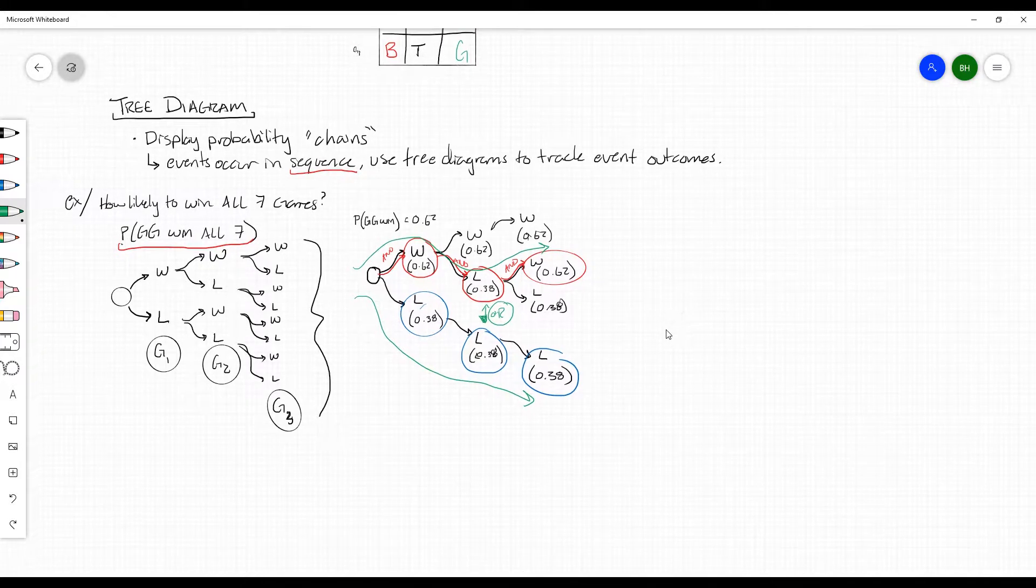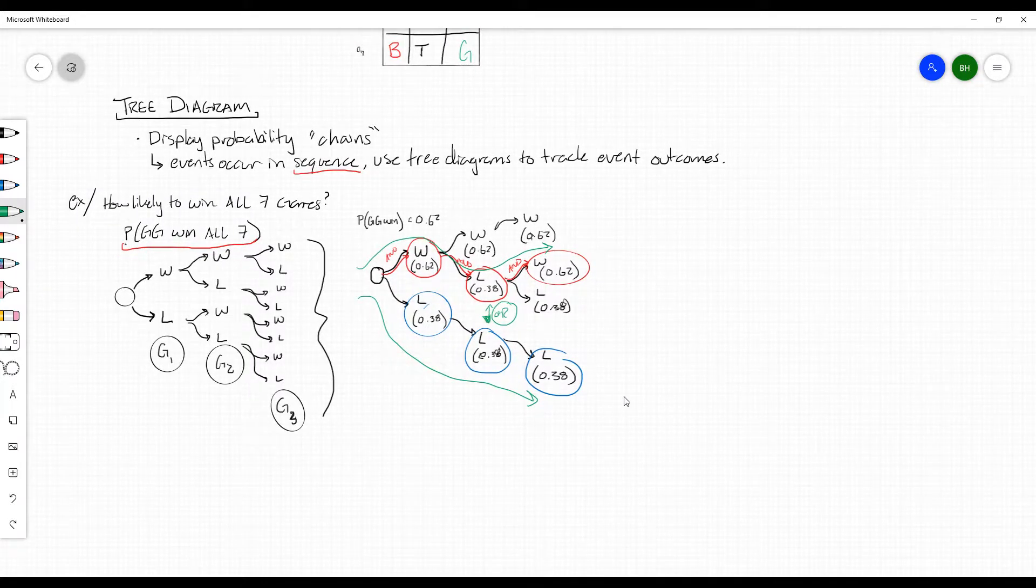So tree diagrams are really helpful when it comes to listing all of your events and looking at the possible outcomes. It makes it really fun to do. I tend to organize mine like this, using some letters, and I like to make it nice and big on my paper. But we're gonna be able to work through some tree diagrams together as we continue through class this week.